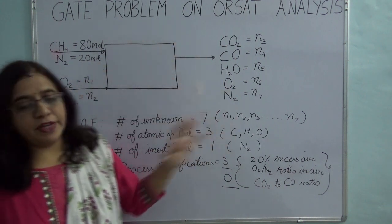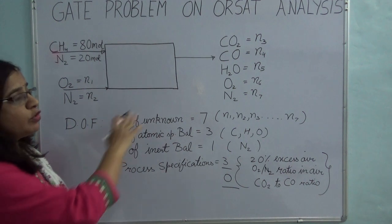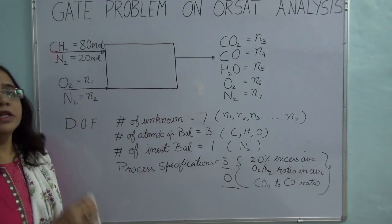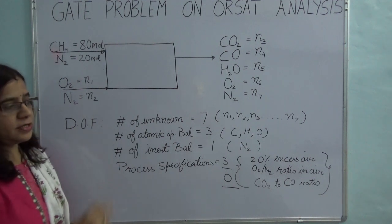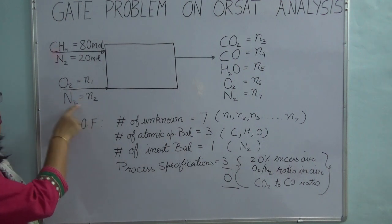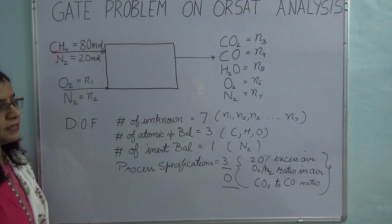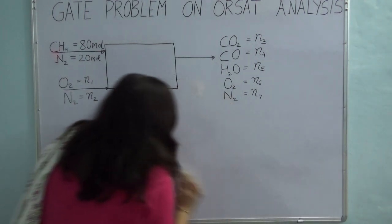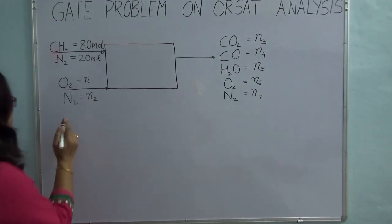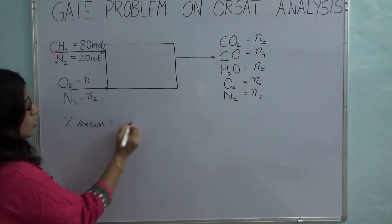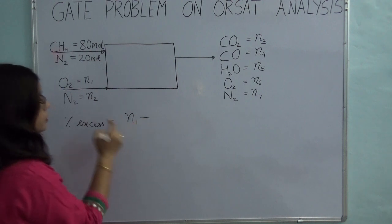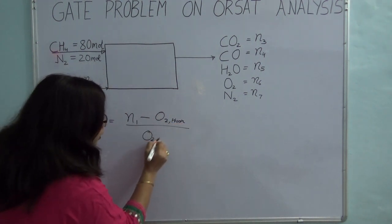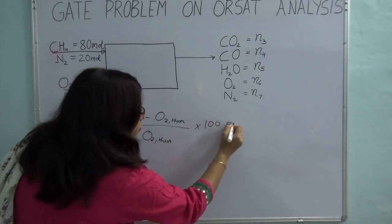The problem asks us to calculate the Orsat analysis in volume percent. In any such problem, always try to start with either the inert balance or the process specifications. Since we don't know how much nitrogen is going in, we cannot take the inert balance directly. So let's start with the process specifications. We have 20% excess air. The formula for percentage excess is: (O2 going in, N1, minus O2 theoretical) divided by O2 theoretical, times 100, and that equals 20%.